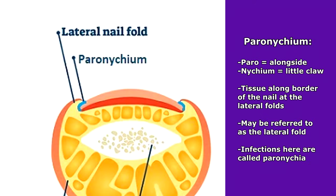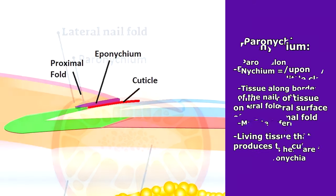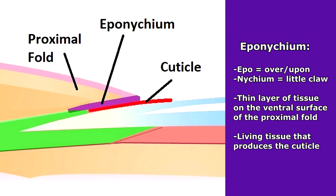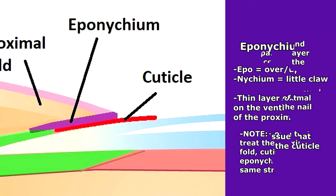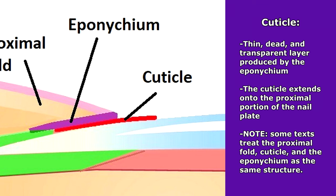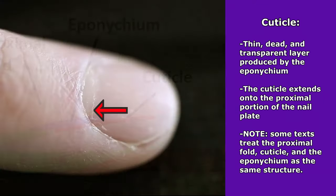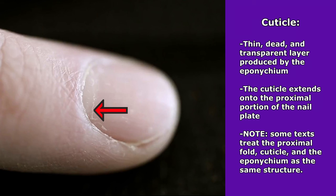The paronychium is the tissue along the border of the nail plate at its lateral folds. The prefix 'paro' or 'para' means 'alongside or beside,' again referring to the nail. The eponychium is the thin layer of tissue on the ventral surface of the proximal fold that covers, seals, and protects the nail's matrix and root. The prefix 'epo' or 'epi' means 'over or upon,' so this is over or upon the nail at its root. The cuticle is the thin, dead, transparent tissue produced by the eponychium that extends onto the base of the nail plate to help seal and protect it.